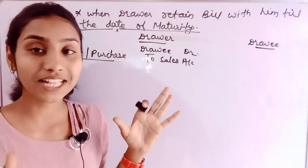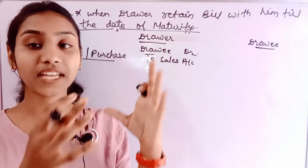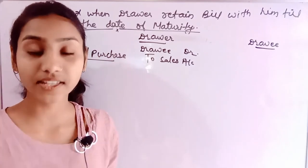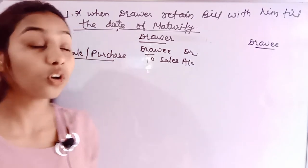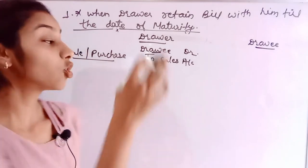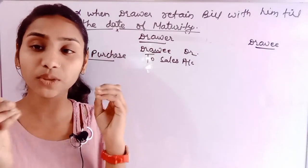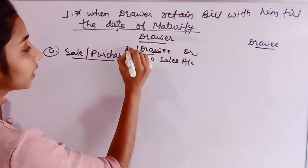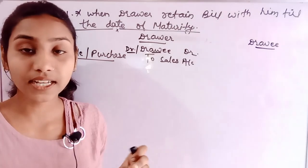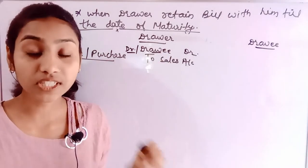The nominal rule says all expenses and losses are debit, all incomes and gains are credit. So sales is our income and we show it in credit. Under the modern rule, this drawer is our debtor — an asset. When assets increase we show the increase as debit. Sales revenue is revenue; when revenue increases we credit it.